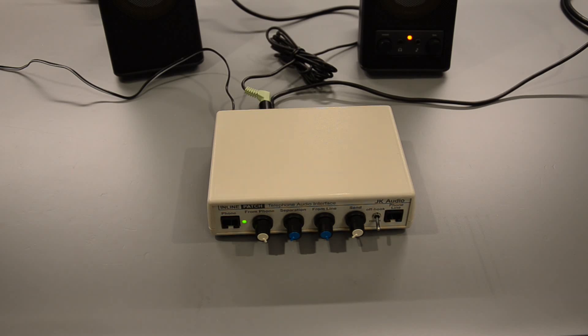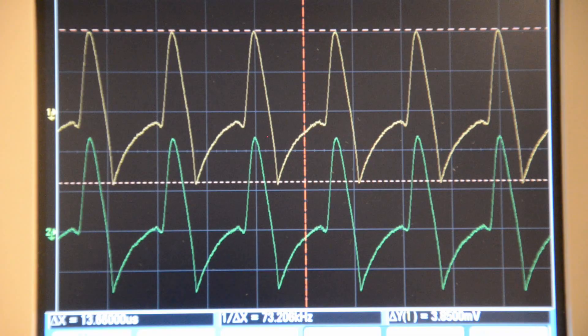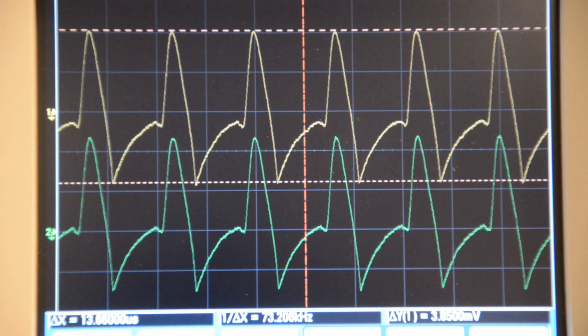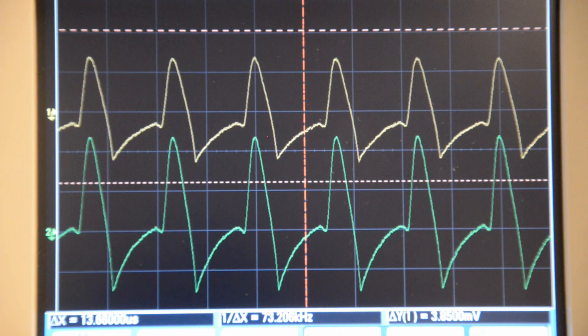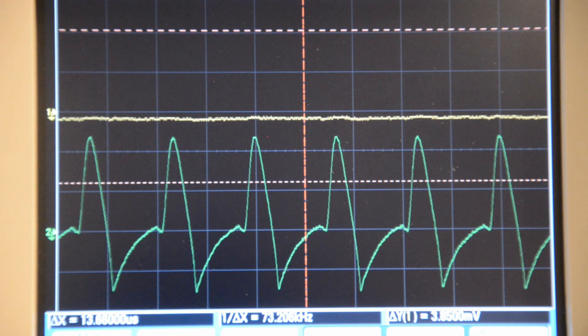And we can go ahead and take a look at this on the oscilloscope. Channel 1, which is in yellow, corresponds to audio from the phone line. Right now the potentiometer is at its minimum setting, and as I turn it up, at the maximum value you can see that the power line noise is pretty much completely gone.